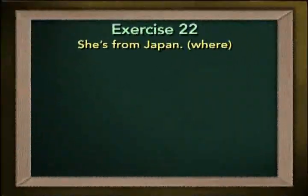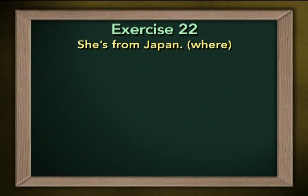In this exercise, you'll have an opportunity to write questions with all of our question words. For example, you'll see an affirmative sentence and the question word: 'She's from Japan. Where?' And you write the question: 'Where's she from?' Easy, huh? Pause the program, look at the study guide, do the exercise, and return here.